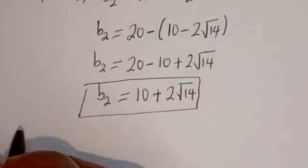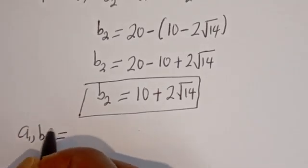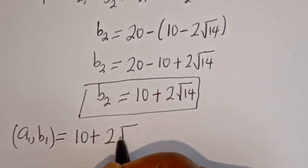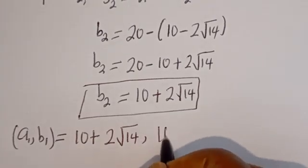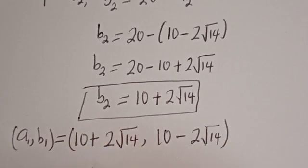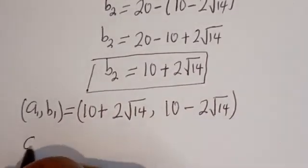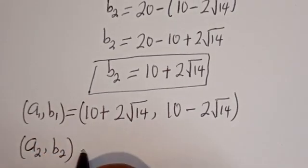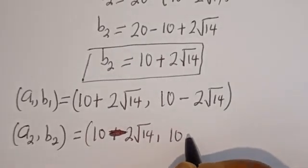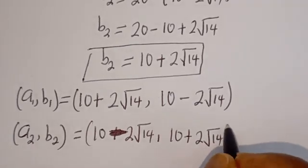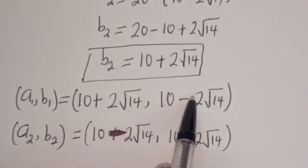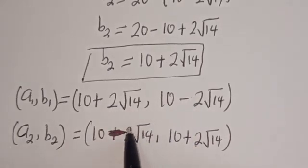Therefore, the solution pairs are: (A1, B1) equals (10 plus 2 root 14, 10 minus 2 root 14), and (A2, B2) equals (10 minus 2 root 14, 10 plus 2 root 14). We can see that A1 equals B2 and B1 equals A2. Let's check to confirm if the answer is correct.